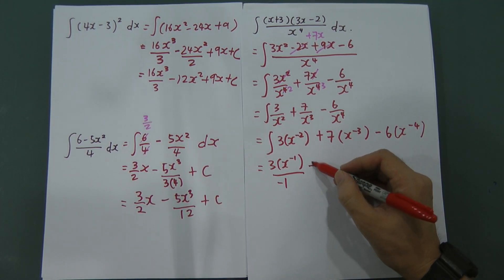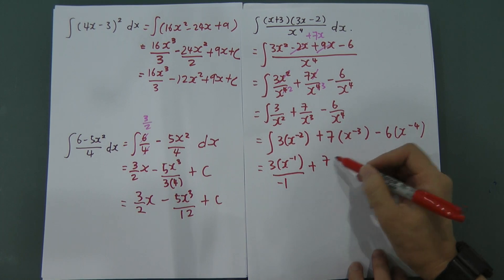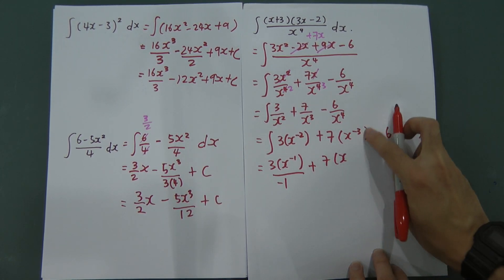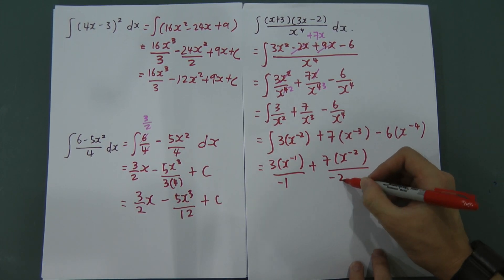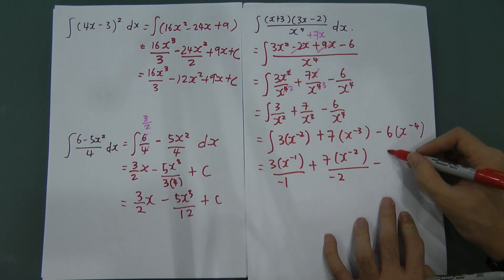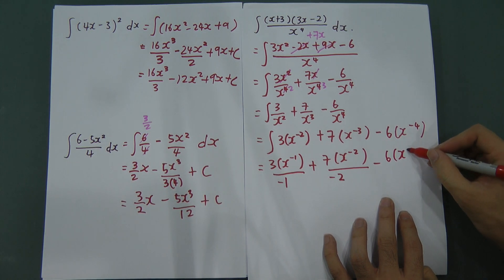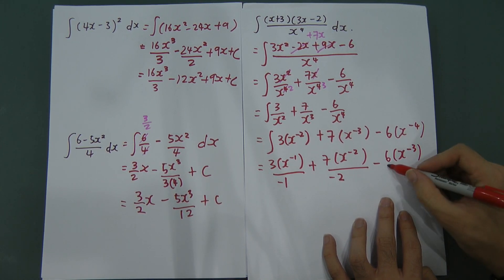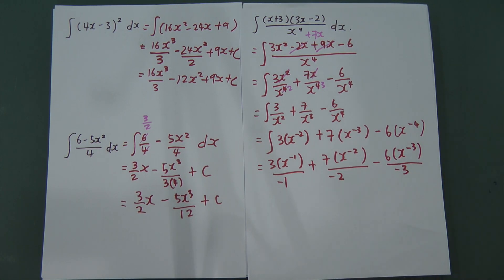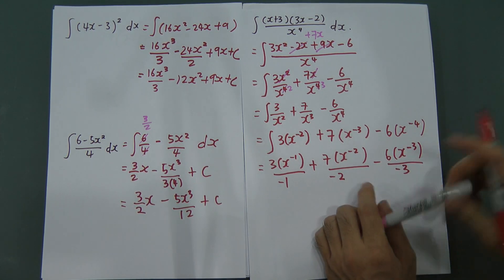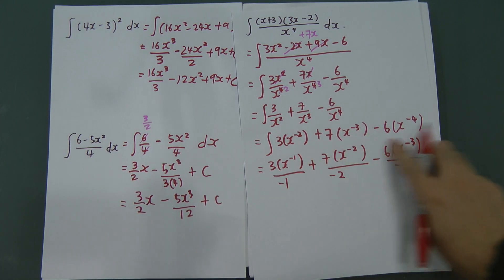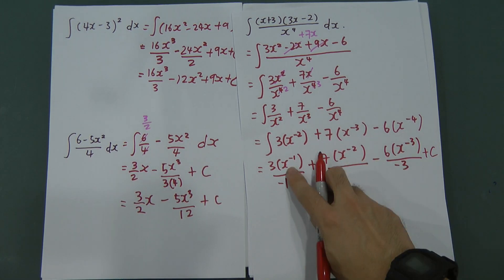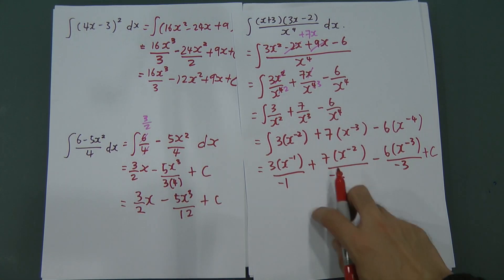For 7x⁻³, add 1 to get power negative 2, so divide by negative 2. For minus 6x⁻⁴, add 1 to get power negative 3, divide by negative 3. Remember to add C. After integrating, rearrange the terms — you have powers of negative 1, negative 2, and negative 3.